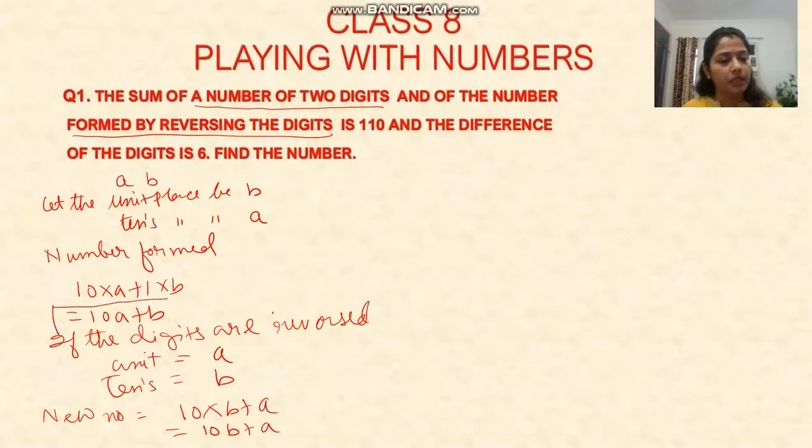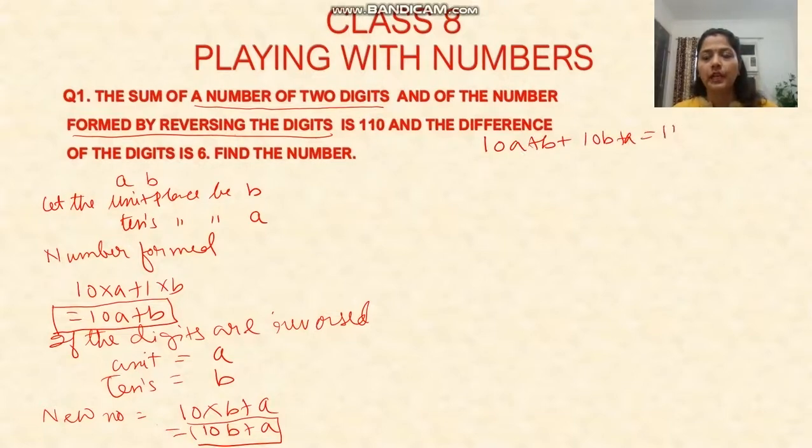The first number was 10a plus b, and the second number is 10b plus a. Now, if you add these two, you get 10a plus b plus 10b plus a equals 110. Solving this, 11a plus 11b equals 110, so a plus b equals 10.